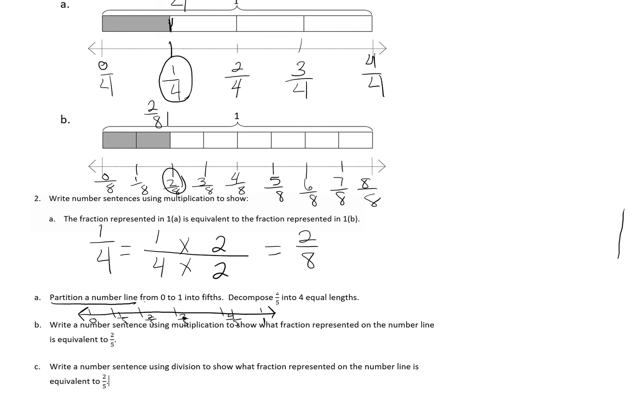They wanted the next part decomposed 4 fifths into 4 equal lengths. Actually, it's supposed to say 2 fifths. So if I break down 2 fifths into 4 equal lengths, right now I have 2 equal lengths between 0 and 2 fifths. I have 2 spots, and I'm going to draw a dotted line so that now I have 4. I have 1, 2, 3, 4 equal lengths between 0 and 2 fifths.